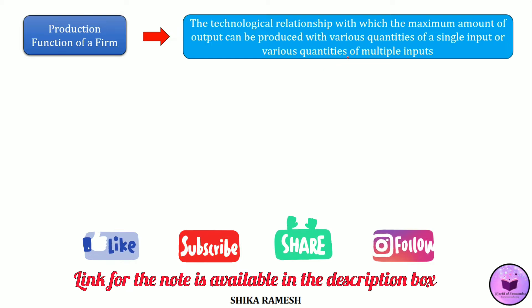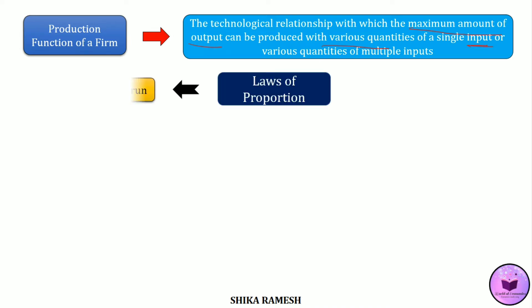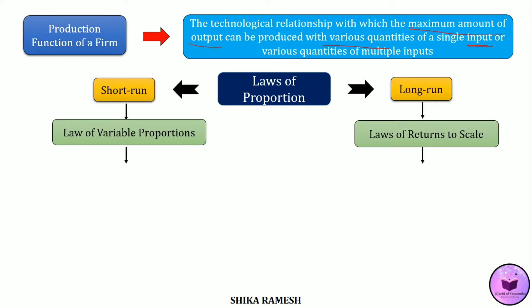In simple terms, a production function shows the maximum amount of output that can be produced by the firm with various quantities, combinations, or various proportions of inputs. In the short run, it is called the law of variable proportions, whereas in the long run, they are laws of returns to scale.